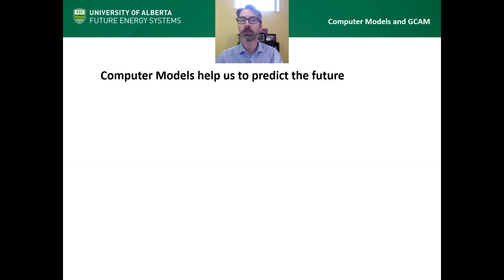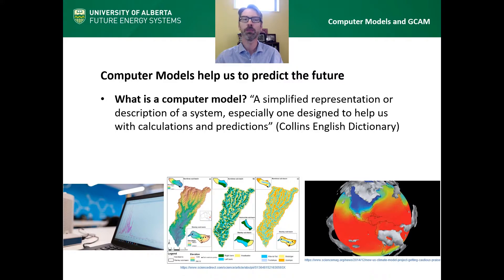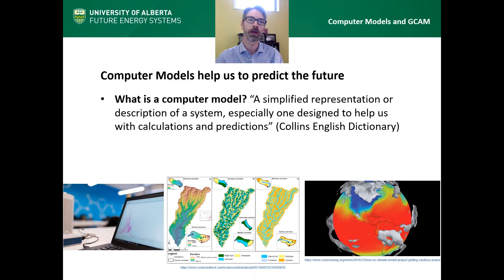Computer models can help us to predict the future. What is a computer model? One definition is that it's a simplified representation or description of a system, especially one designed to help us with calculations and predictions. Some examples you might have heard of include flight simulators, weather forecasts, or even computer games like SimCity.